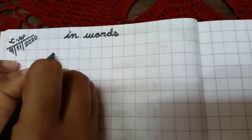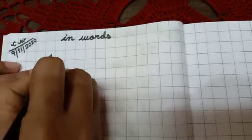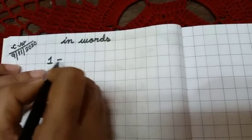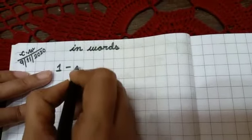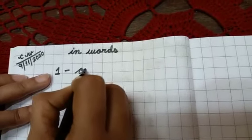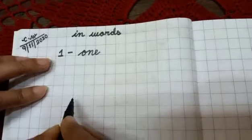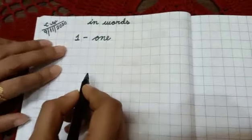Here you will write 1, then give dash, and write the spelling of 1. O N E.